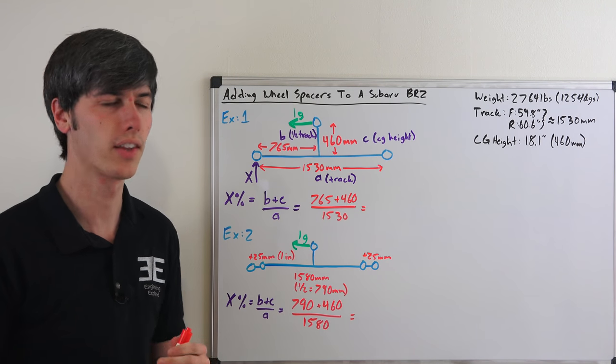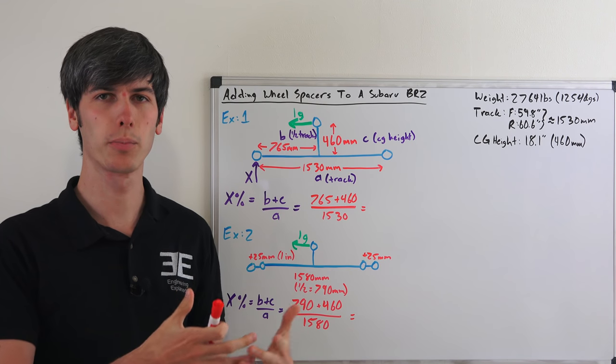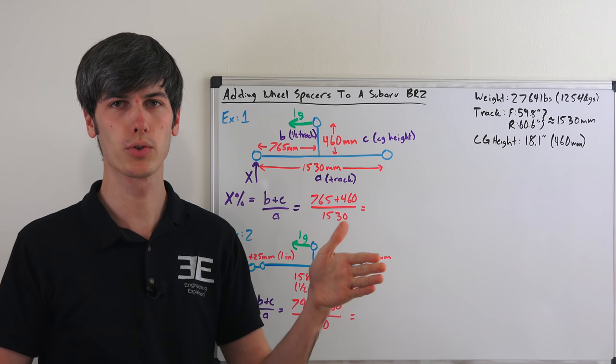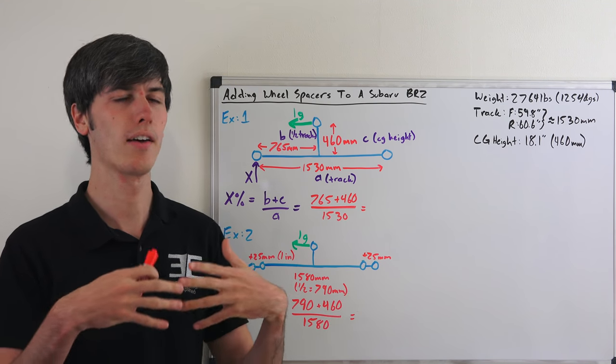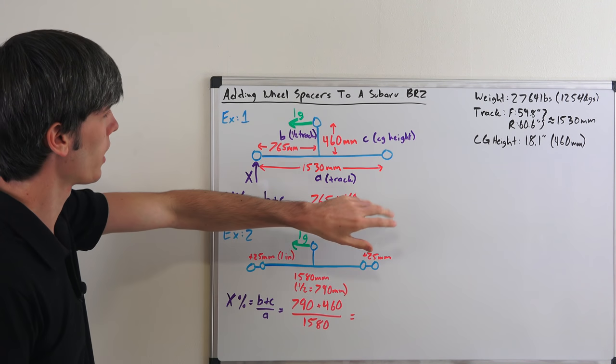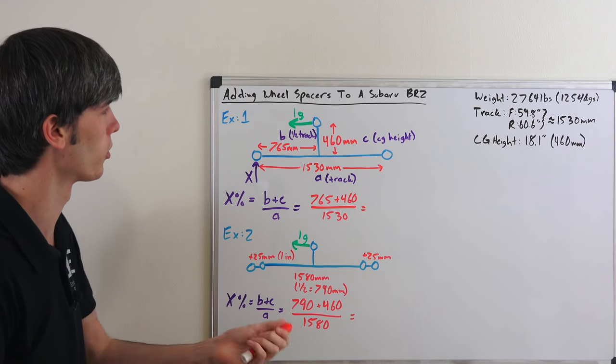So the idea behind this is that if you add wheel spacers to a vehicle you increase the track. By increasing the track you reduce load transfer under cornering, and by reducing load transfer under cornering you have more even loading on your tires and thus have more grip. So let's do an example: we're going to be adding one inch spacers or 25 millimeter spacers to a Subaru BRZ.